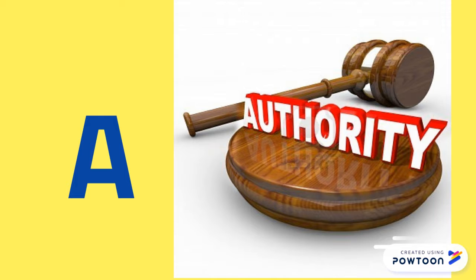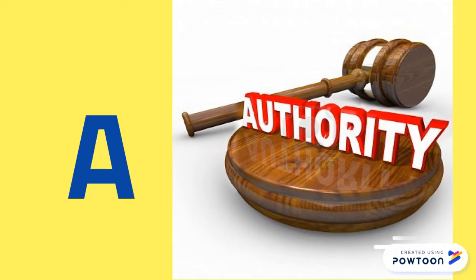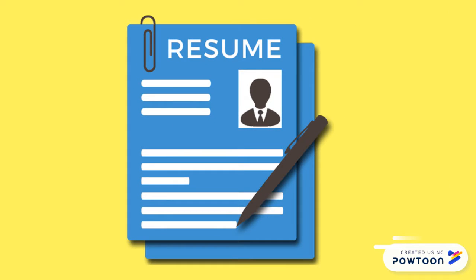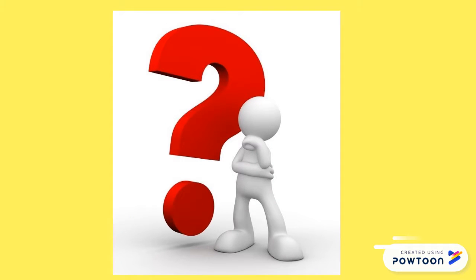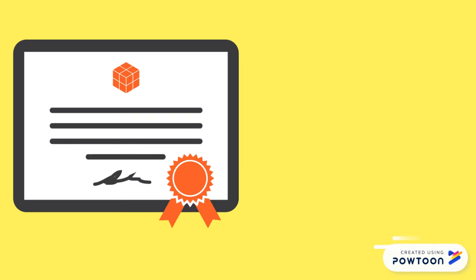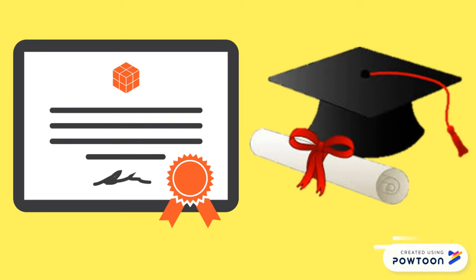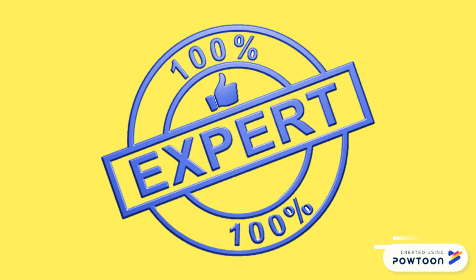The first A stands for Authority. Look at who created the source and consider their background. What do they know about the topic? Do they have training, education, or experience related to the topic? You want to find sources that are created by experts or people who have authority in that area.